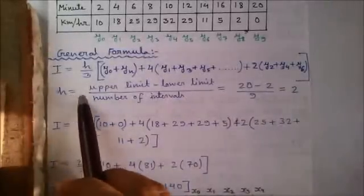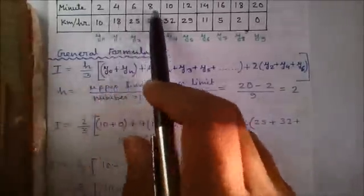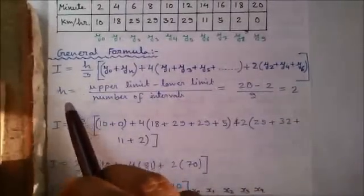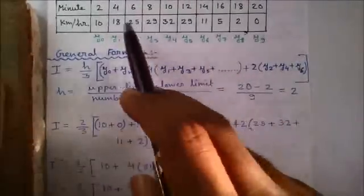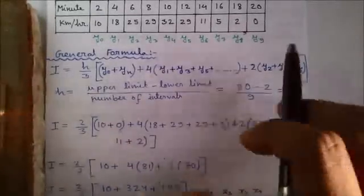Where h is called the interval gap. Here interval gap is 2, visible to eyes, but sometimes you have to calculate it. h is upper limit (that is 20) minus lower limit (that is 2) divided by number of intervals (that is 9). So h becomes 2.